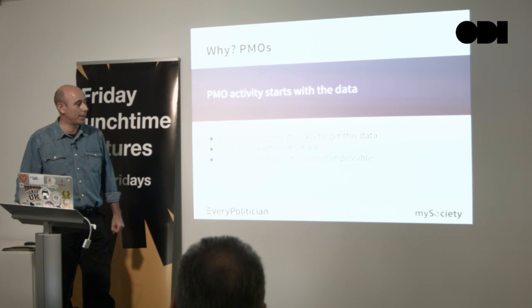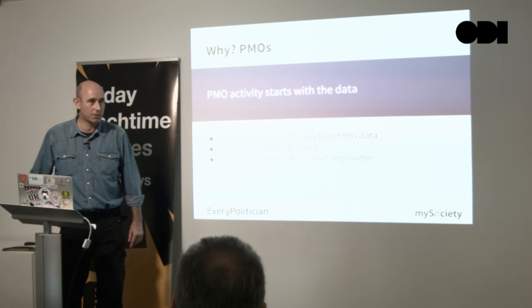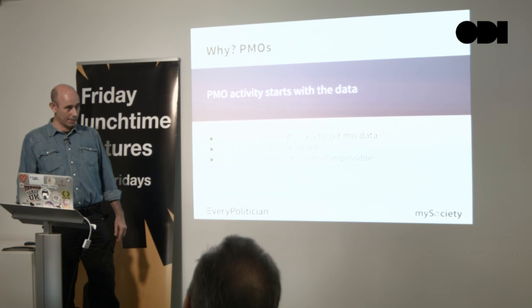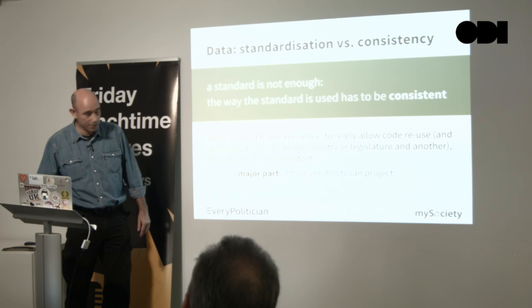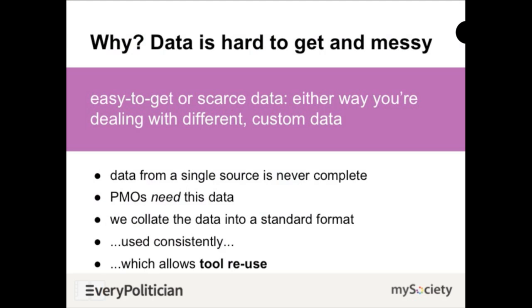In some countries, getting the data is easy — in the UK, Parliament makes it available through an API with unique identifiers. In some countries it's hard, and in some it's almost impossible to find out the names of the representatives. And those are not necessarily the countries you'd expect — it's not necessarily a lack of technical ability that prevents that information being available. Getting the data is hard and the data is messy, so every PMO needs to solve this problem. We want to do that for them by collating the data into a standard format used consistently, which allows tool reuse.